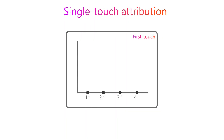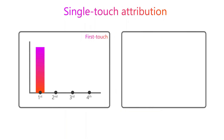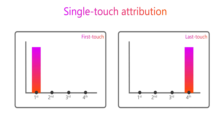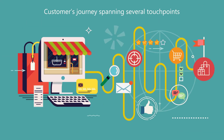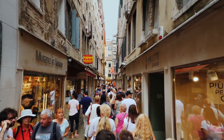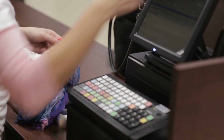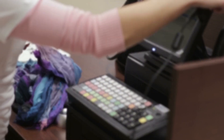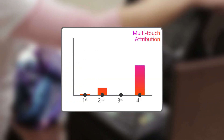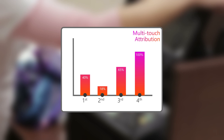While single-touch attribution models give full credit for a conversion to a single touch or interaction that a prospective customer encounters, it overlooks the fact that today a customer's journey spans more than one device or campaign. With the goal of converting more prospects into buyers, it therefore becomes imperative to have a multi-touch attribution framework that can determine the value of each customer touchpoint leading to a conversion.